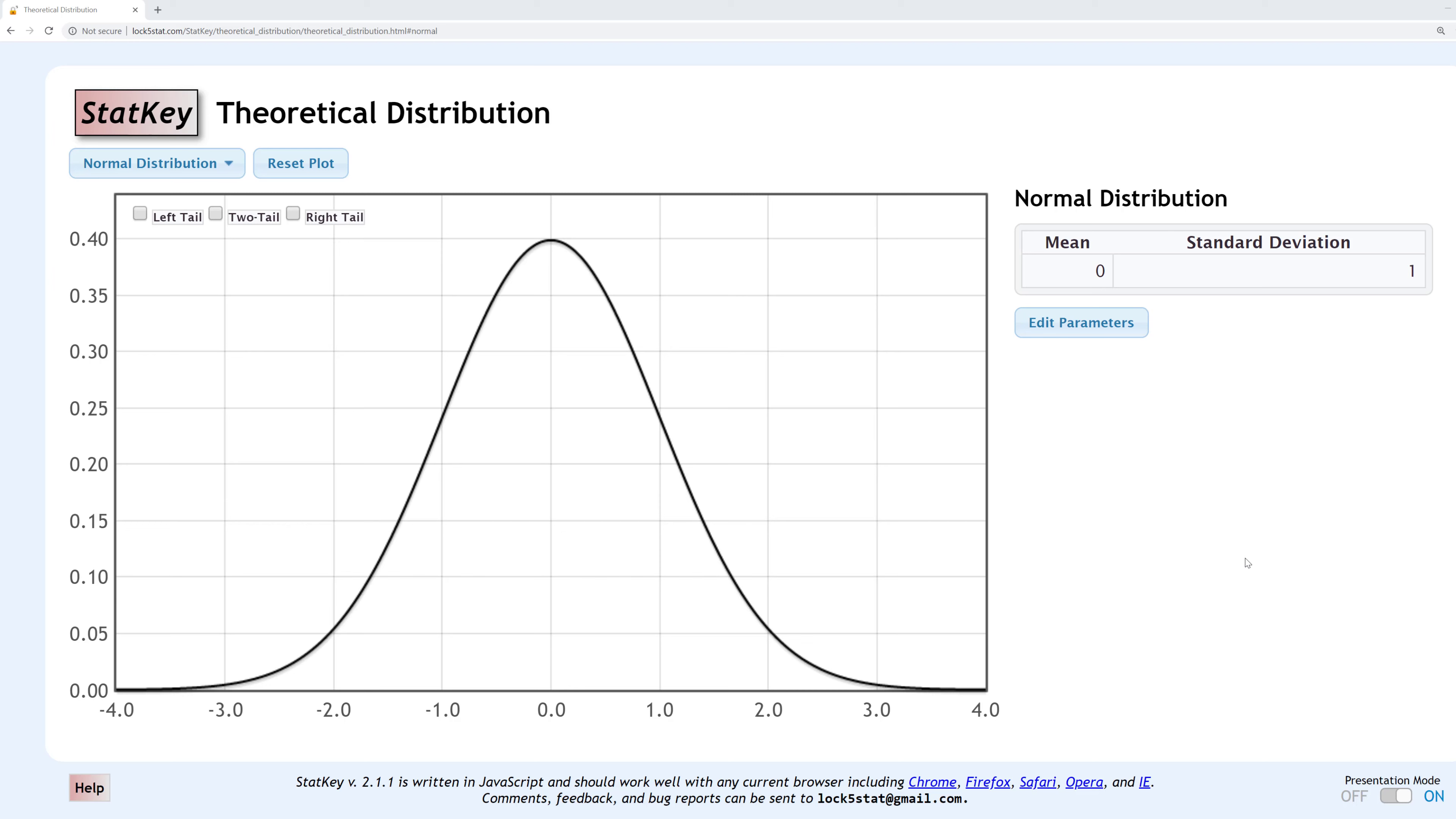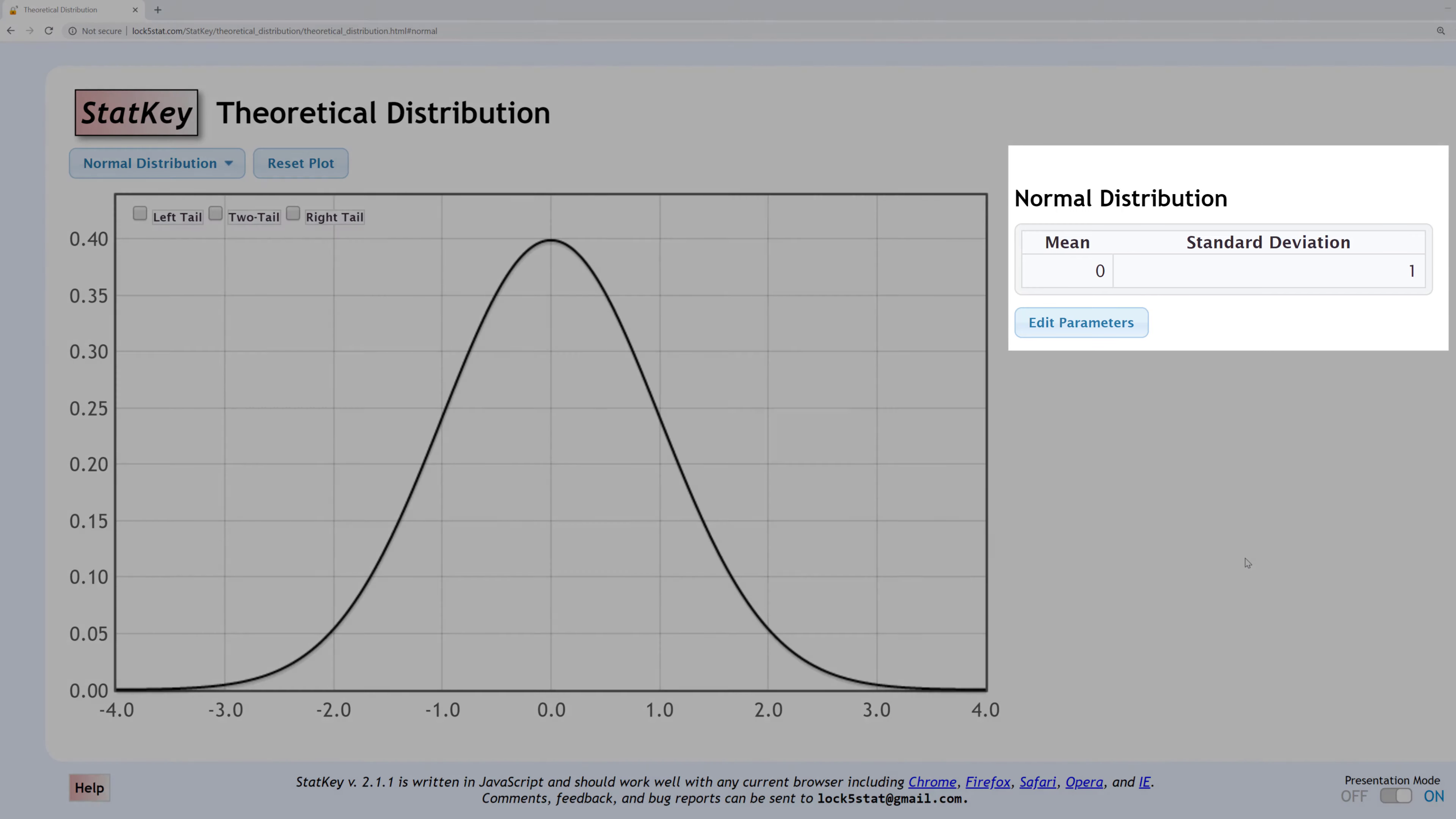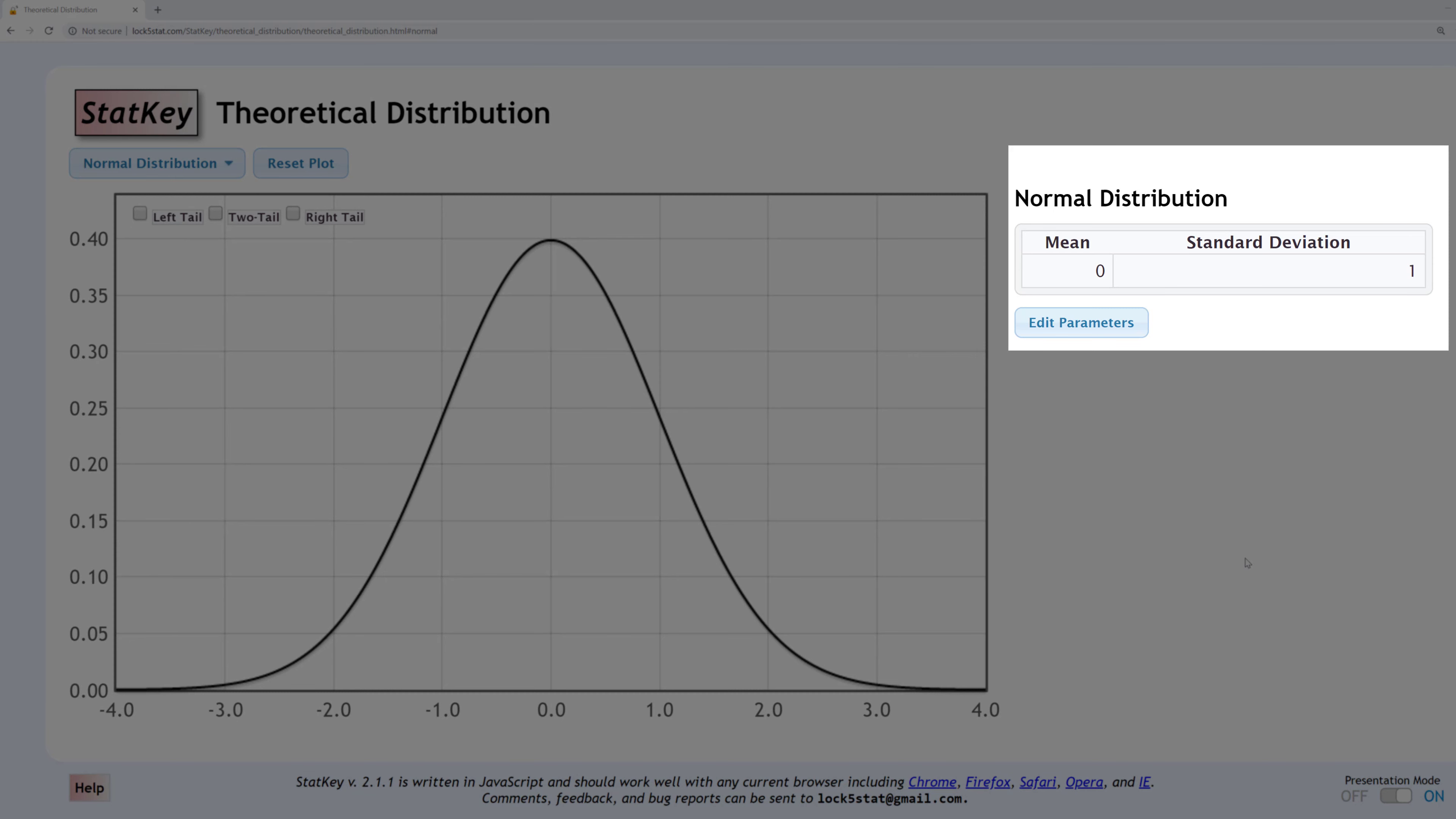In this video I'll walk through a few examples of using this interactive distribution. The default normal distribution in StatKey is the standard normal distribution, also known as the Z distribution. This has a mean of 0 and standard deviation of 1. StatKey gives you the option to edit these values, but for this video we'll just be working with the Z distribution.